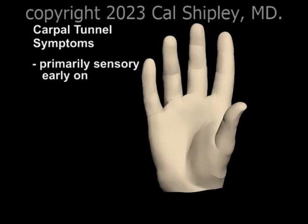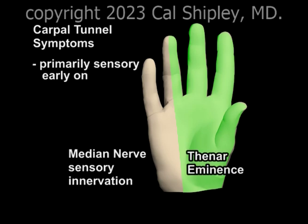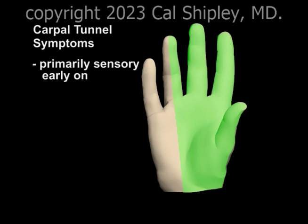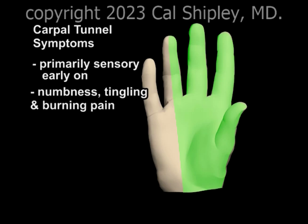The symptoms of median nerve compression in carpal tunnel syndrome are primarily sensory until the more advanced stages of the disorder. The median nerve supplies sensation to the thumb and thenar eminence of the palm, as well as the palm side of the second, third, and the medial or inner half of the fourth finger. The classic symptoms of carpal tunnel syndrome occur within this area of sensory innervation, and consist of numbness, tingling, and burning pain.